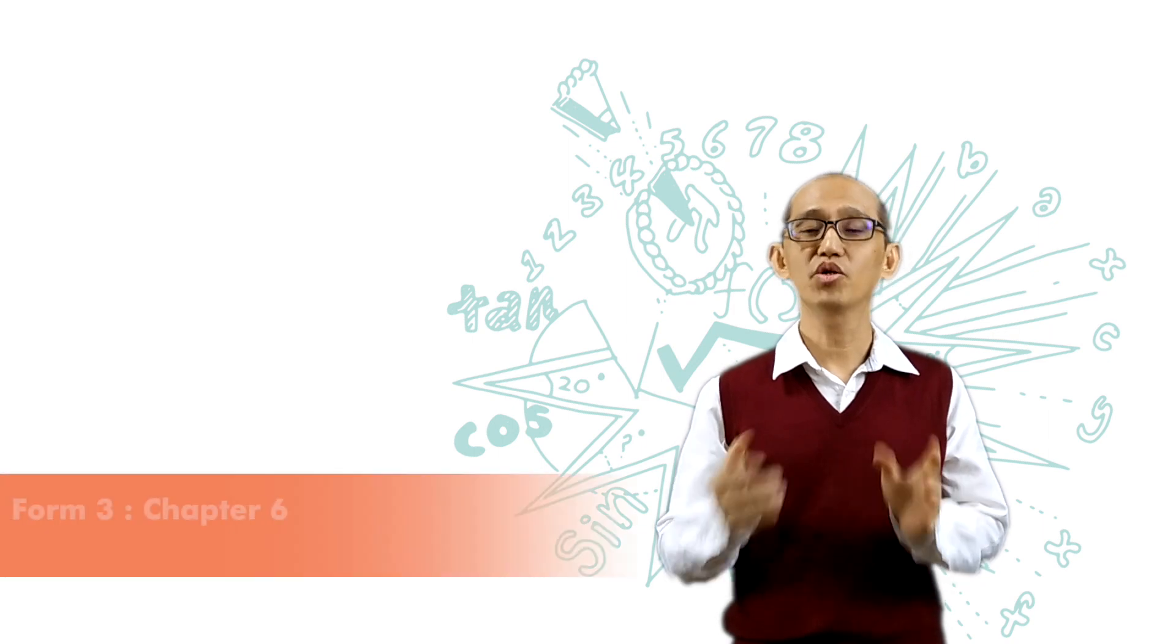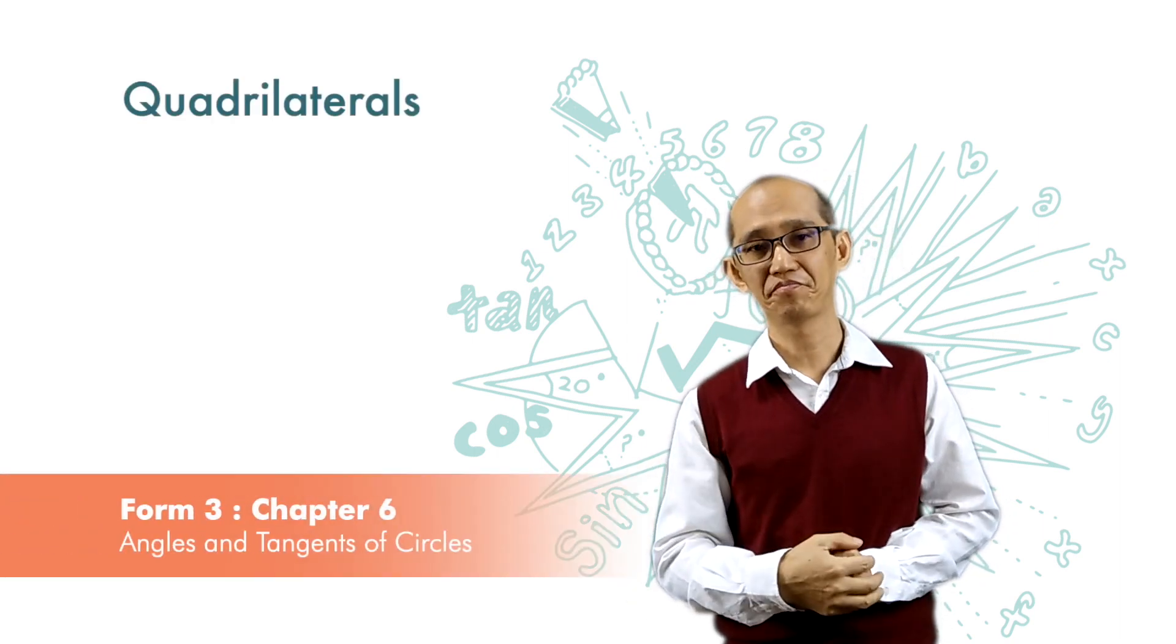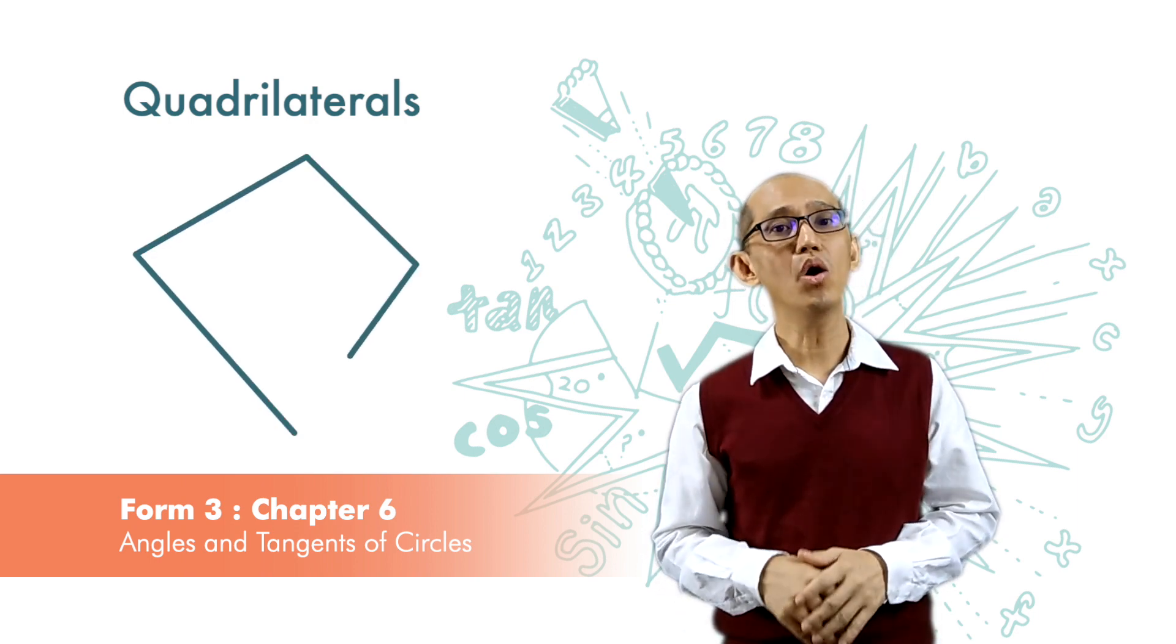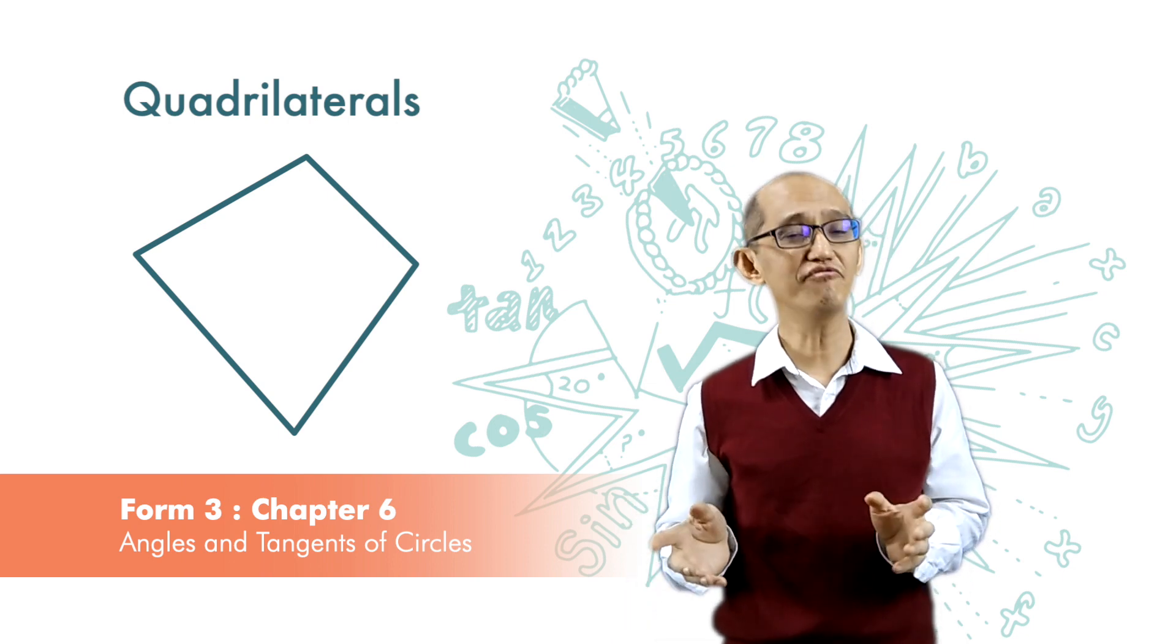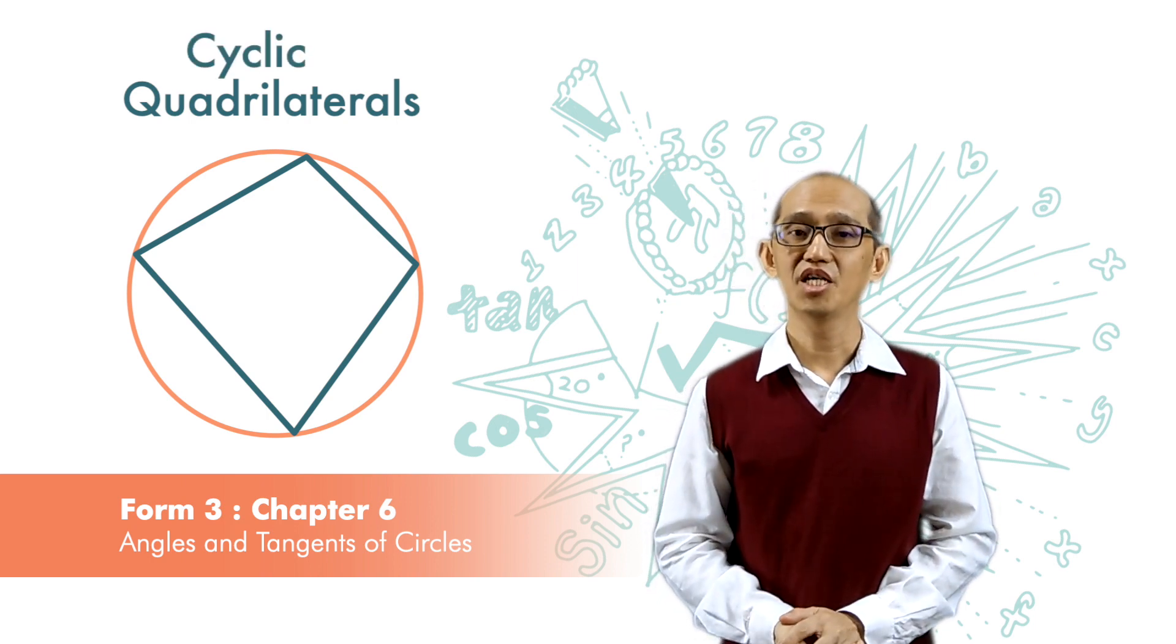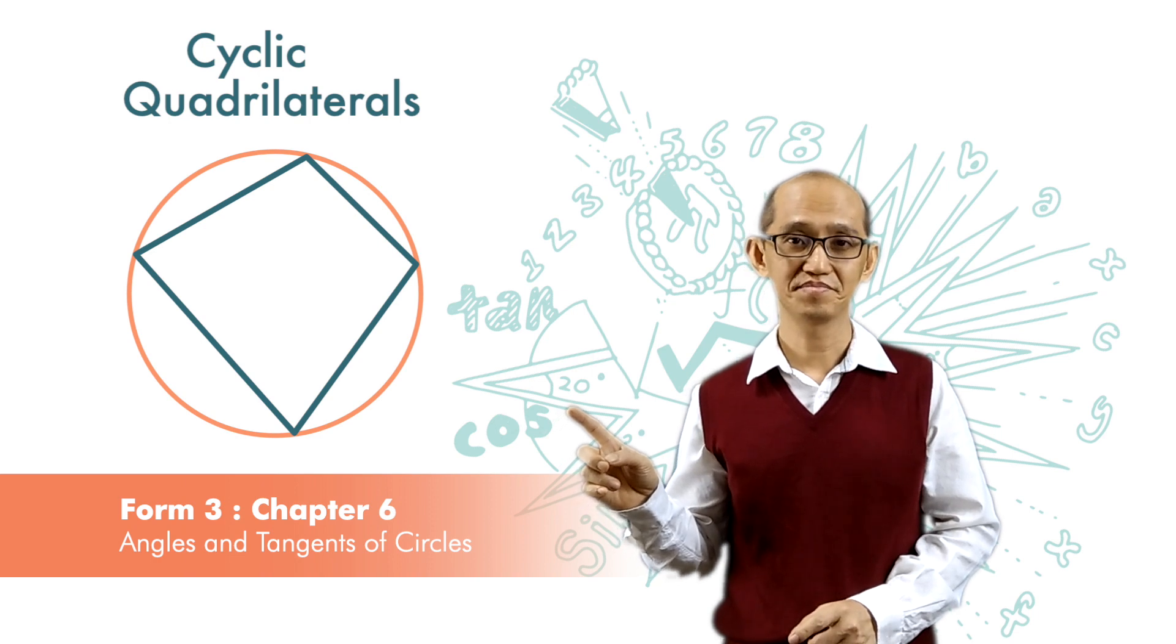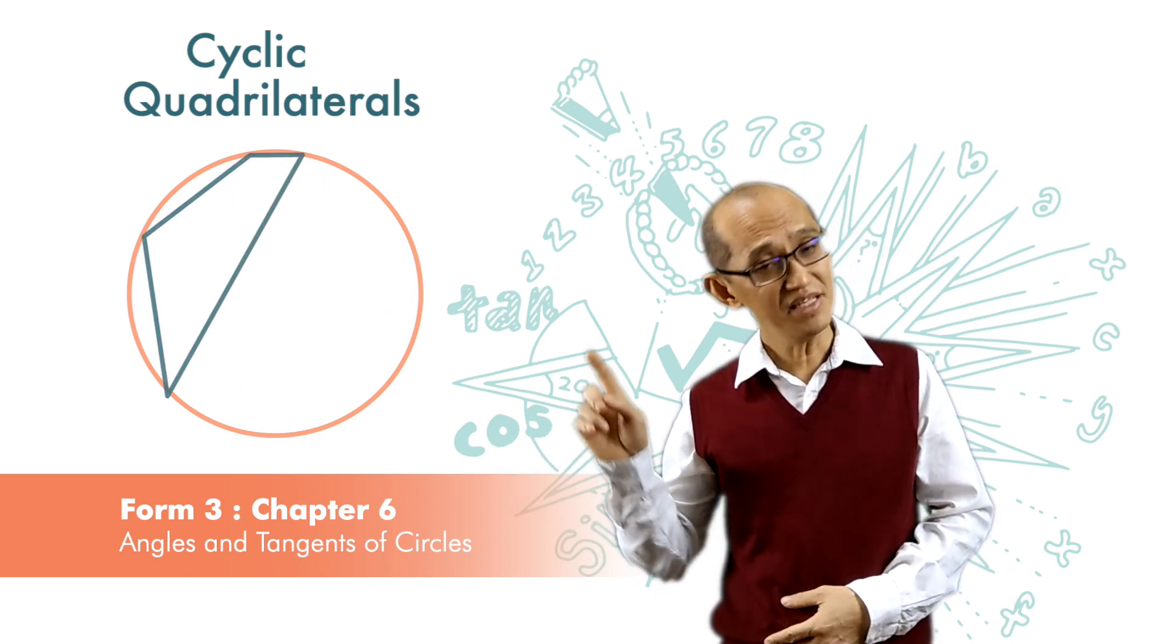We are going to next look at quadrilaterals in circles. A quadrilateral where all its four vertices lie on the circumference of a circle is called a cyclic quadrilateral. So this is a cyclic quadrilateral.